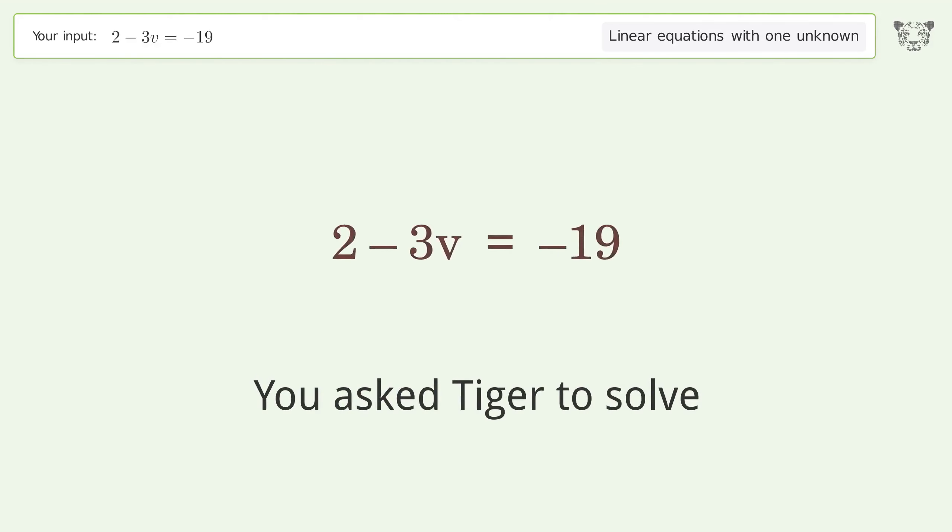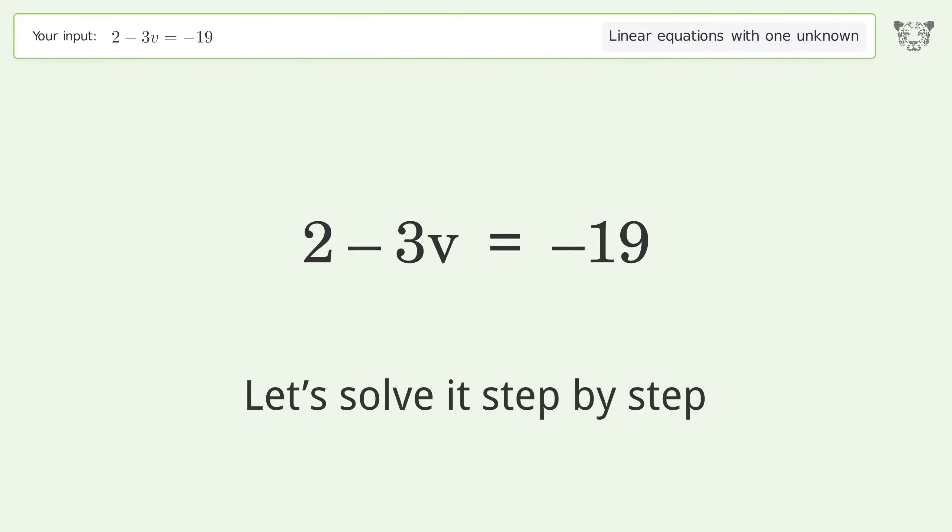You asked Tiger to solve this problem, which deals with linear equations with one unknown. The final result is v equals 7. Let's solve it step by step.